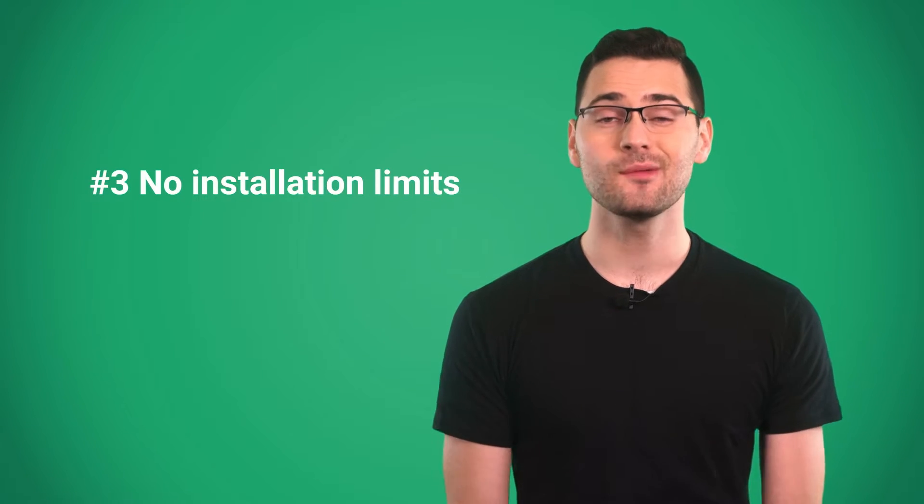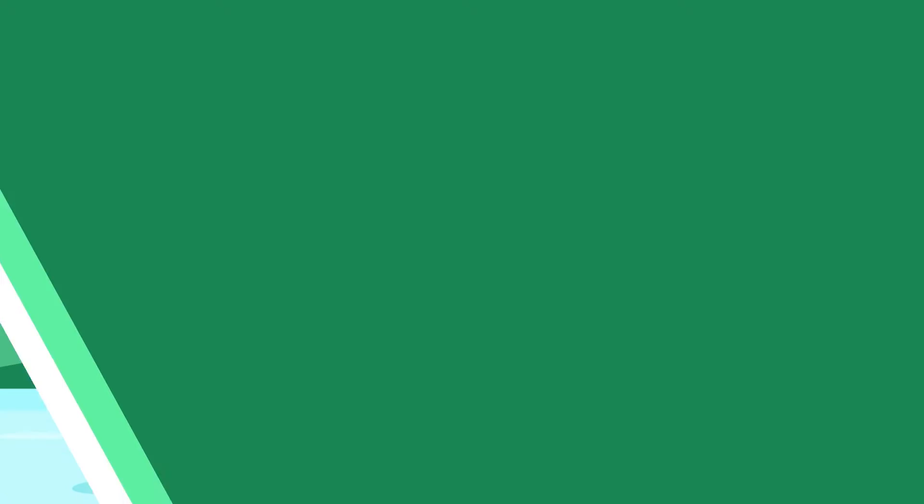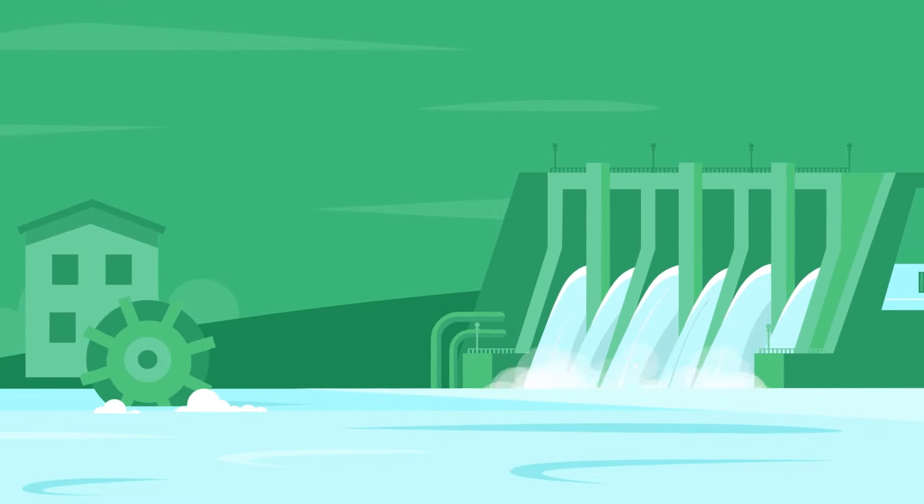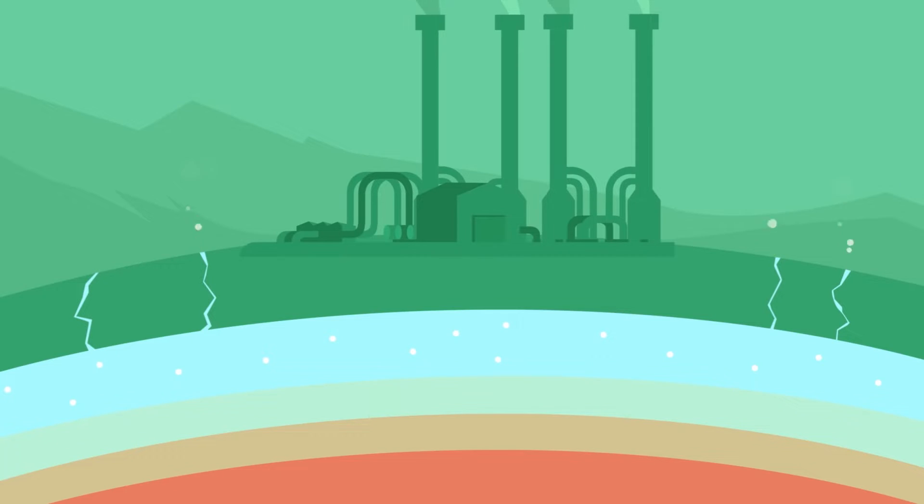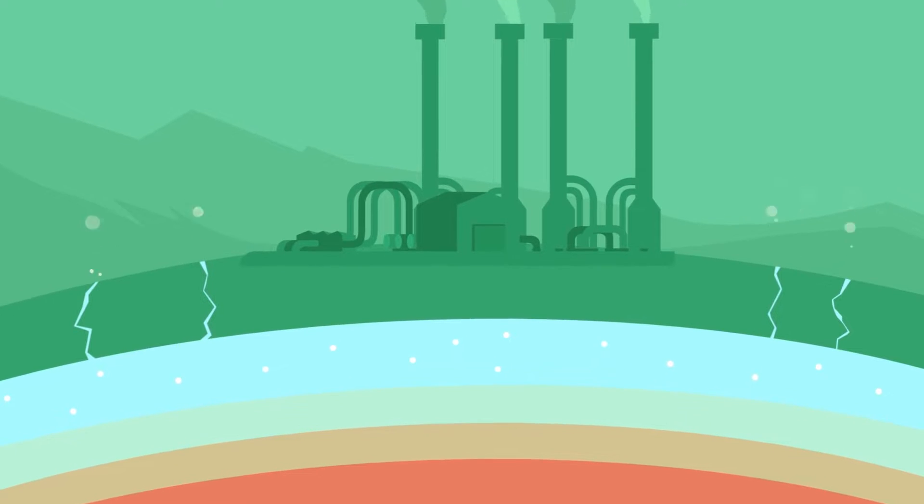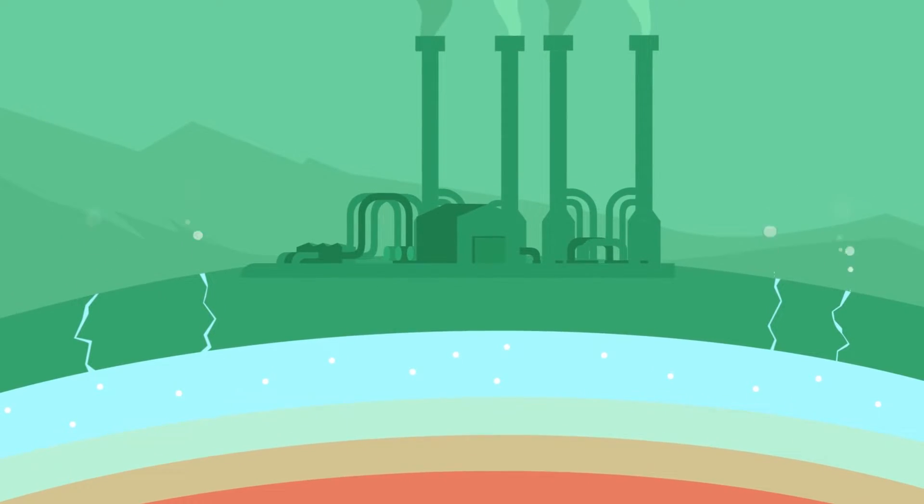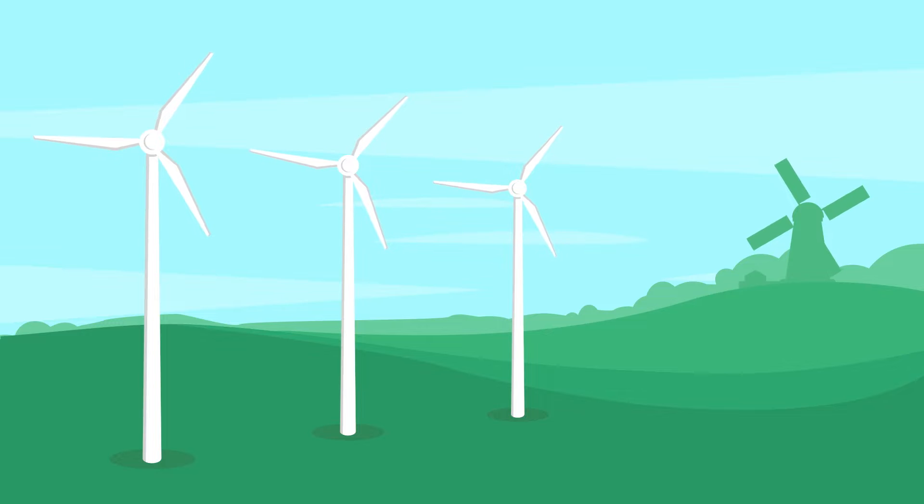The third advantage that solar energy has is it can be installed almost anywhere. Hydroelectric dams always need some type of water body to function. Geothermal plants can only be installed in the areas near tectonic plate boundaries. Wind turbines work better in the open space, and people don't like living next to them. They are loud and they're kind of ugly.